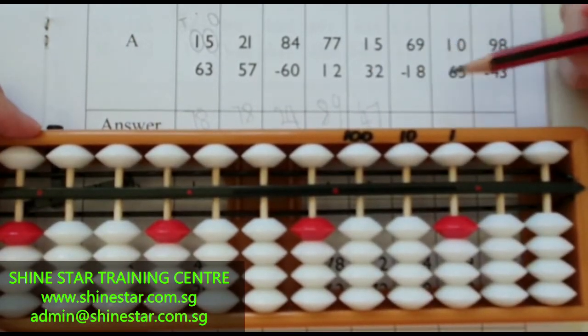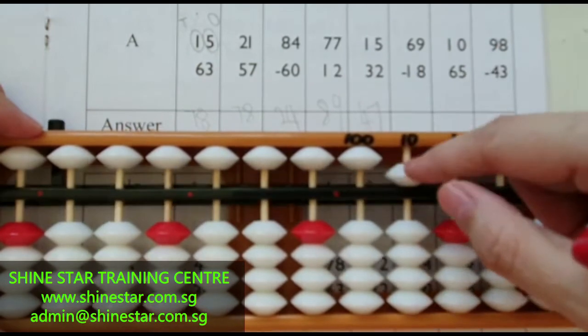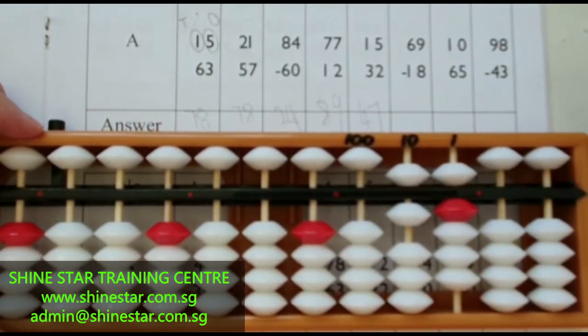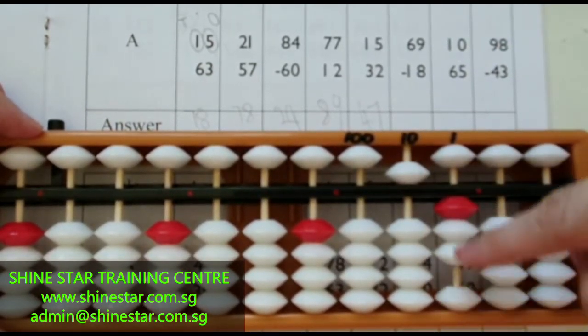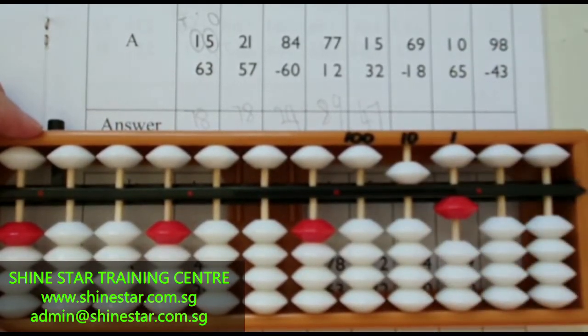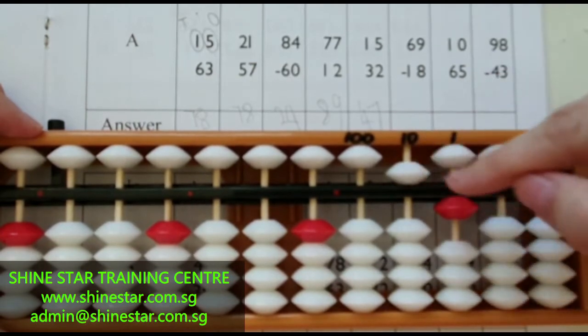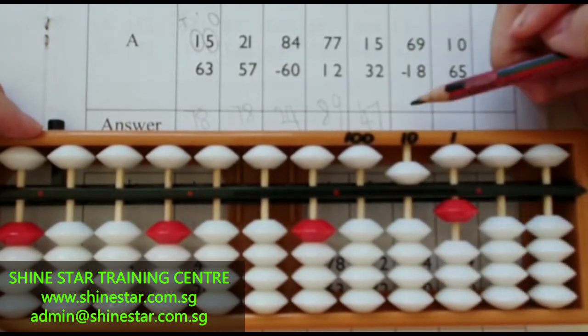Sixty-nine minus eighteen. The answer is fifty-one.